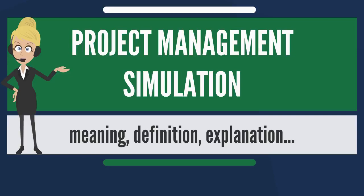Project management simulation is also used to analyze real projects. The goal of the simulation is to show the user the different possible outcomes of their decisions, along with the probability that each outcome will occur. The simulation helps in reducing project risk and in choosing the best project plan. In a typical simulation, the project is first modeled into a software tool along with uncertain variables. A simulation is then run to check the different possible outcomes and their probability as a result of different inputs for the uncertain variables.